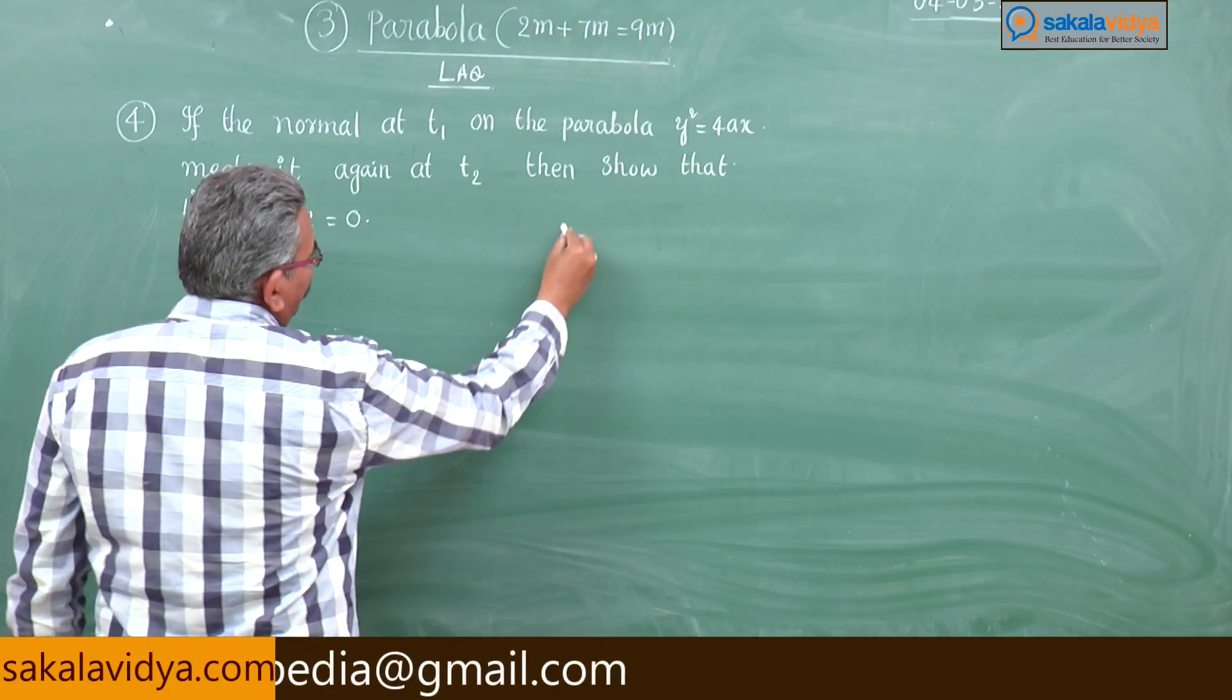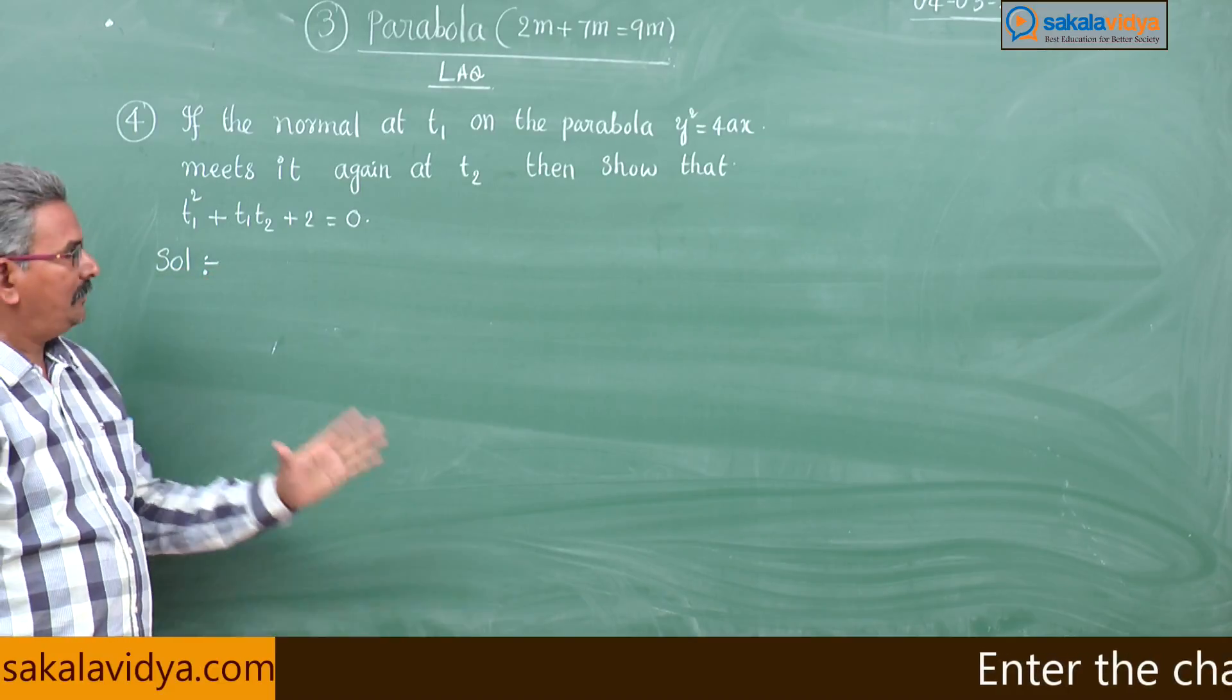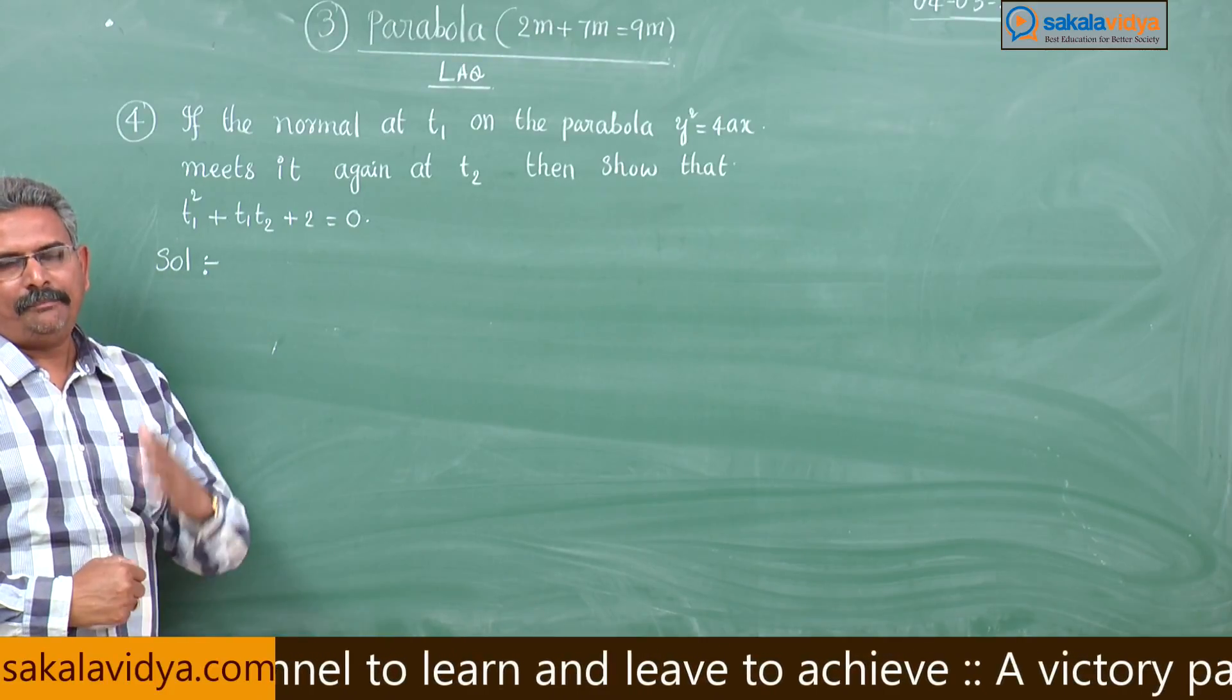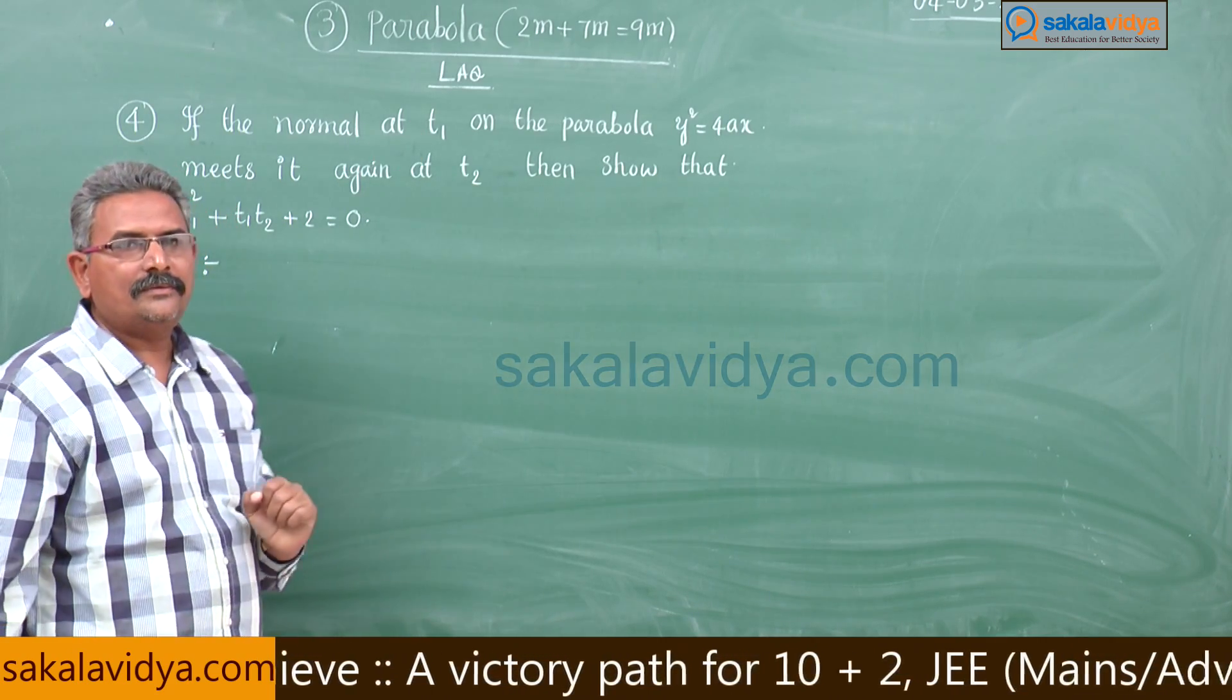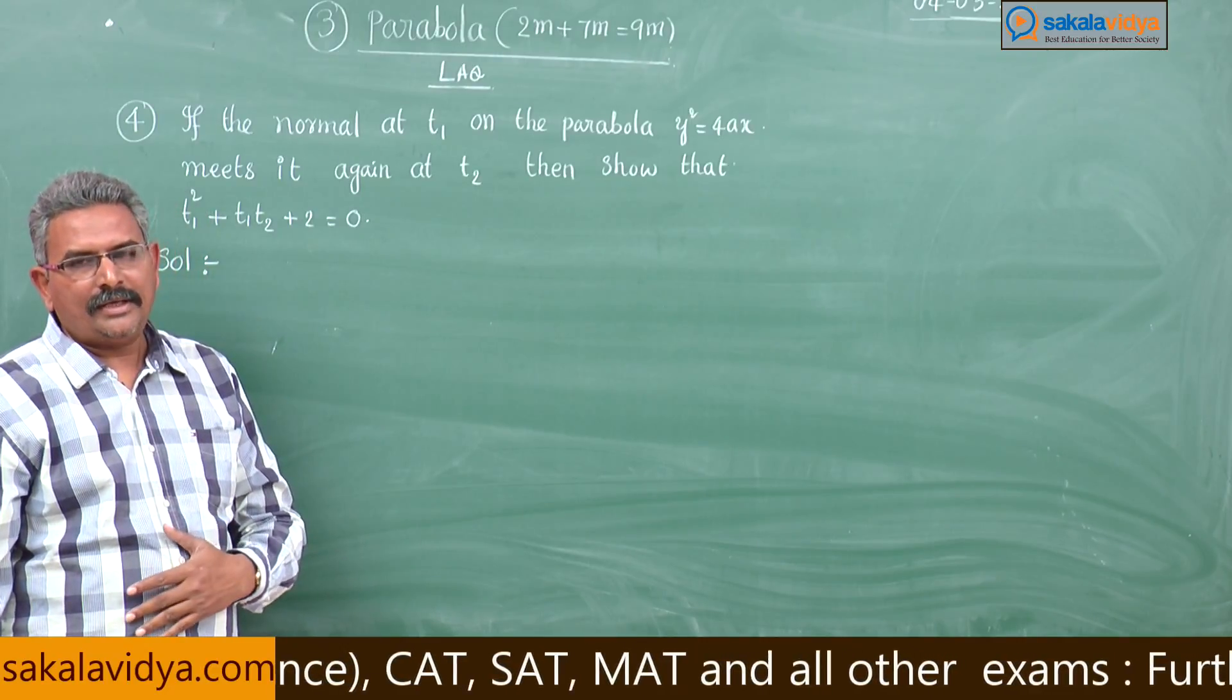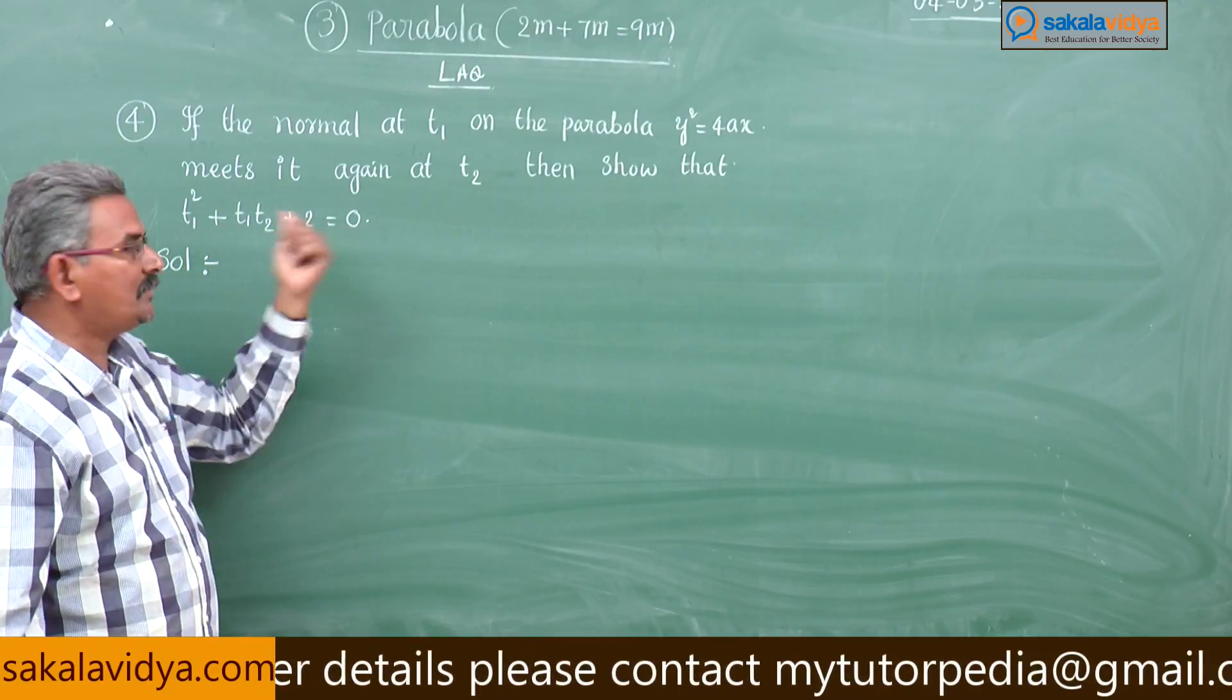Now, before going to solve this problem, first what is the equation of the normal in parametric form? The equation of the normal is given by at t1 means y plus x·t1 is equal to 2a·t1 plus a·t1 cubed. That means the same normal passes through at t2, then we have to find out the condition that t1 squared plus t1·t2 plus 2 is equal to 0.